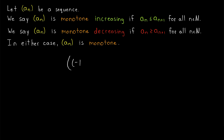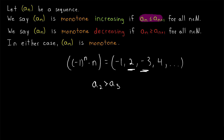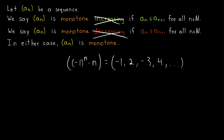How about the sequence where the nth term is equal to (-1)^n times n? The terms of this sequence are -1, then +2, then -3, then +4, and so on. This sequence certainly isn't increasing since, for example, the second term a_2 is greater than the third term a_3, and to be increasing, every term has to be less than or equal to the next one. Similarly, this sequence cannot be decreasing because, for example, a_1 is less than a_2, and for a sequence to be decreasing, every term has to be greater than or equal to the next one. So this sequence is not monotone.